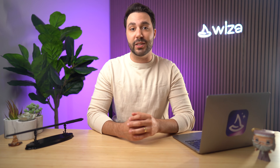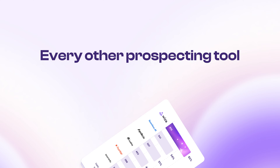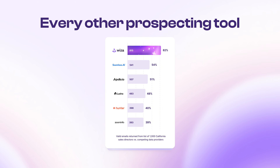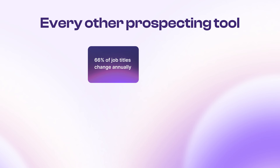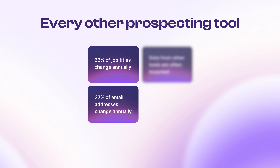In today's fast-paced world, bad data is a huge problem. Every other prospecting tool relies on static databases that quickly become outdated. Job changes, email updates, and other shifts mean that the data you get from other prospecting tools is often incorrect by the time you actually use it. Most of these tools simply can't keep up with all the changes, causing you to rely on information that may no longer even be valid.